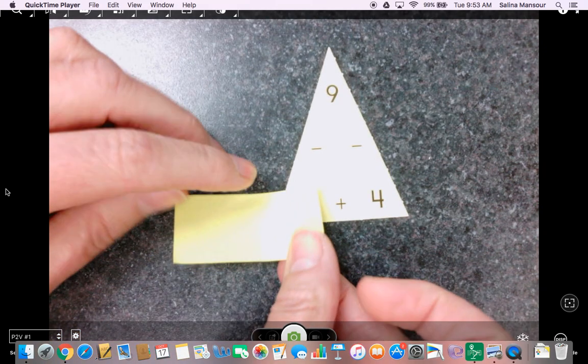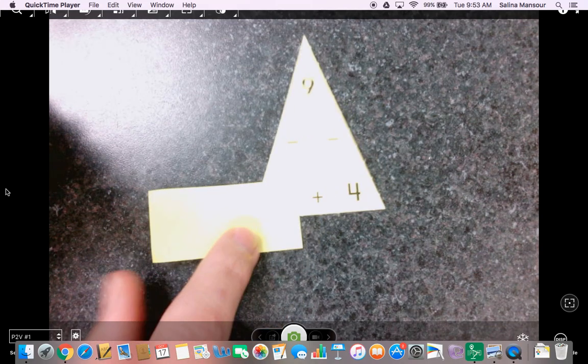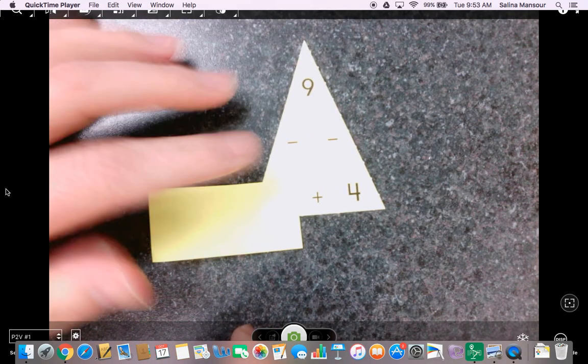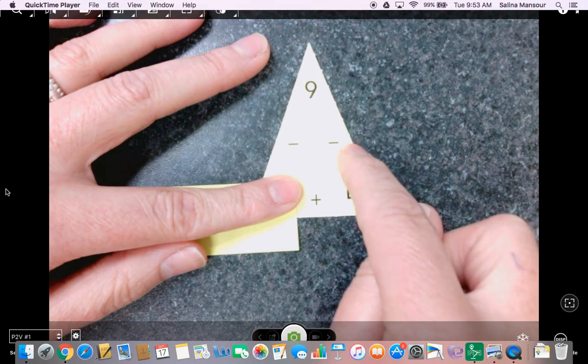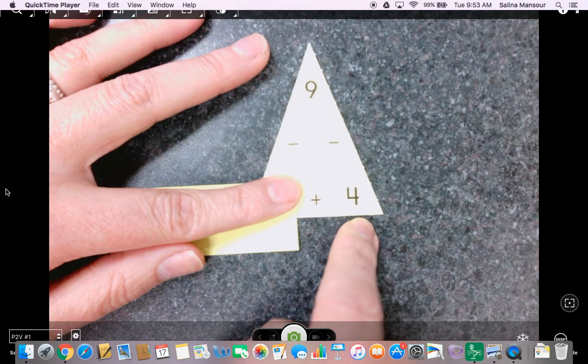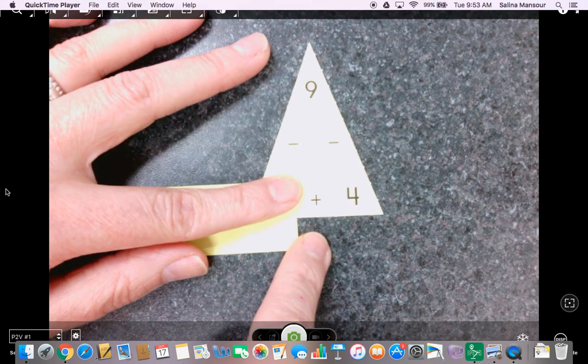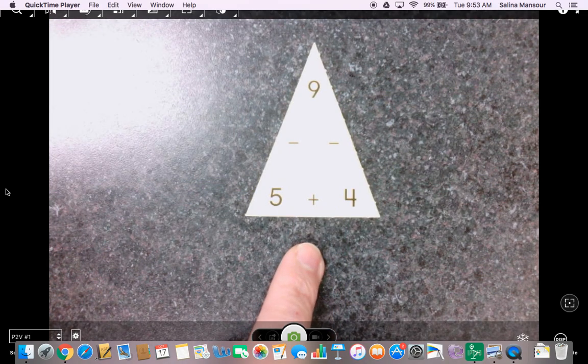So in this way we can cover up one of the add-ends, or as your children might use the language, one of the partners. And now we think to ourselves, what is 9 minus 4? 9 minus 4 equals, I'm thinking 5. So then I'm going to lift up and I am correct, it's 5.